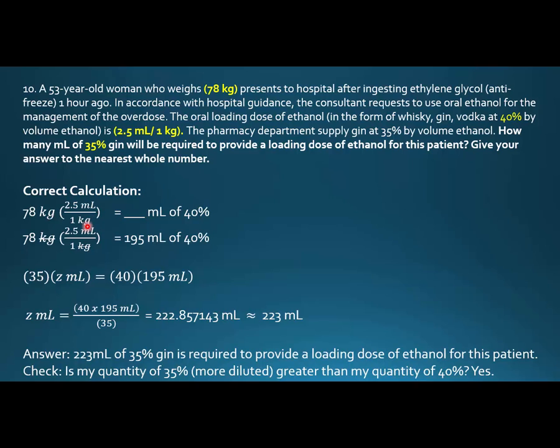Times, or 78 kilograms and one kilogram are diagonal to each other, we get rid of those units, we're left with 195 mLs of 40%. The pharmacy department doesn't have 40%. So what do we need to do?